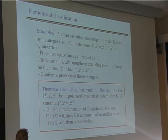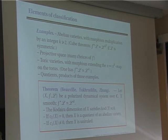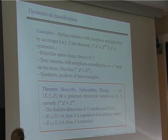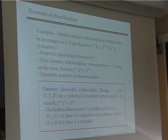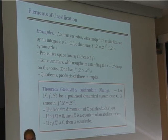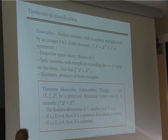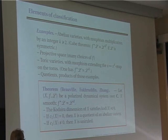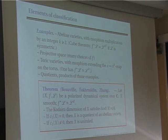I will give a theorem incorporating results of Beauville, Fakhruddin, and Zhang. If (X, f, L) is a polarized dynamical system over the complex numbers with X smooth and f* L = L^d for d greater than 2, then the first result is that the Kodaira dimension of X is non-positive — meaning there are essentially no contravariant tensors on the variety. And if the first Chern class of X is zero, then X is a quotient of an abelian variety.